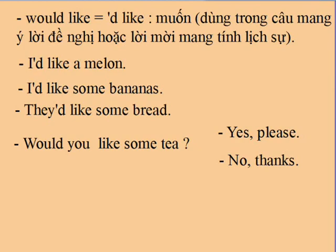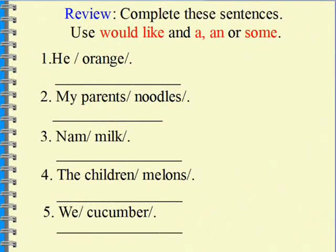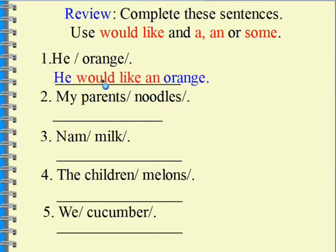Now we do the exercise. Use 'would like', 'a', 'an', or 'some' to complete the following sentences. Number one: He... orange. He would like an orange. Orange begins with a vowel so we use the article 'an'.